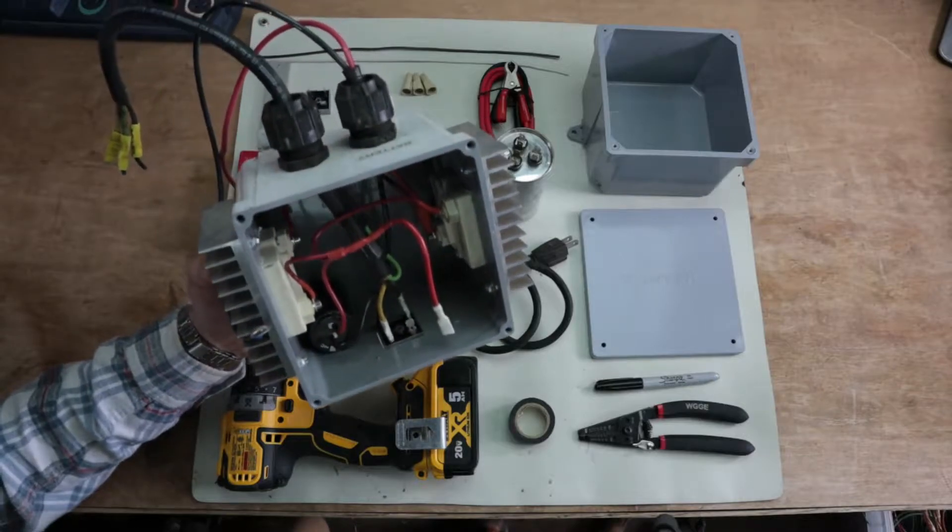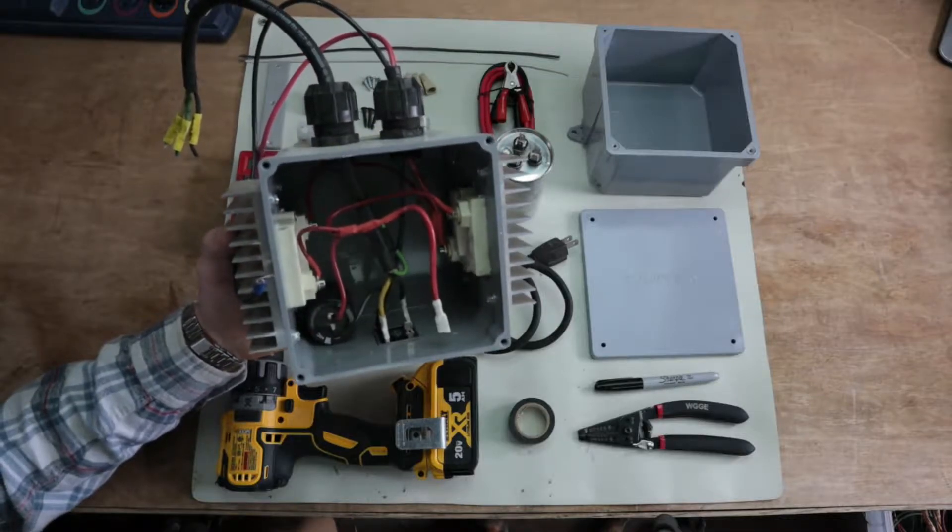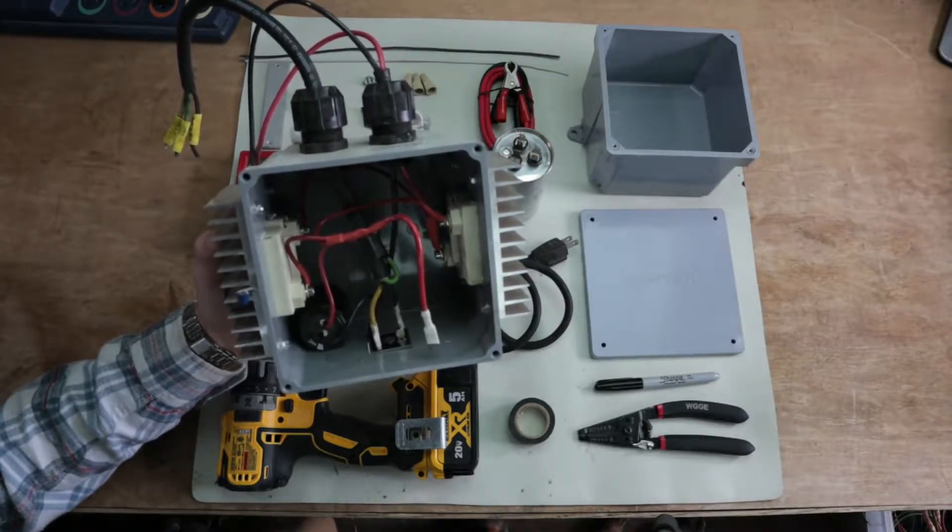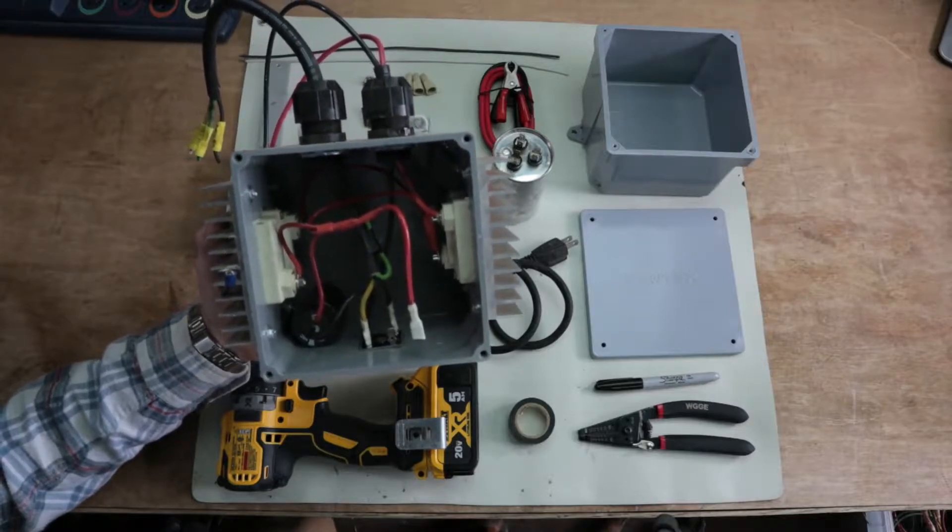they tend to build up what are called sulfate crystals on them. What we're going to be building today is a capacitive charger that will be able to break off those crystals, dissolving them back into the electrolyte and recharging our batteries.